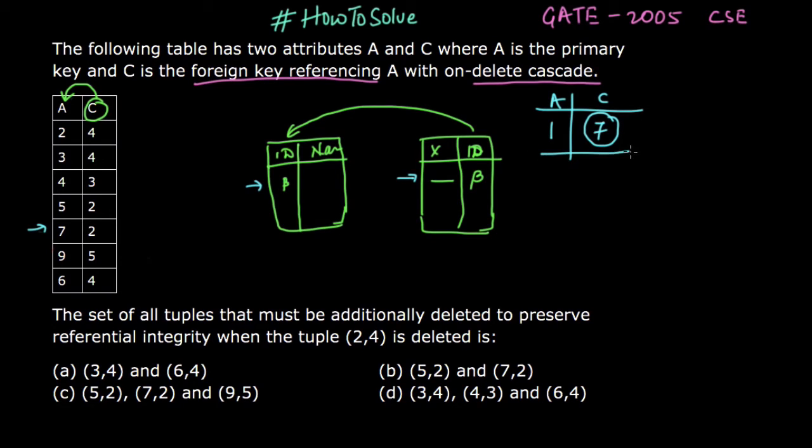But if I want to enter a tuple with 8 and let's say 1, I do not have this tuple already because this key will repeat. If I want to enter 1 and 8, in that case 8 has to be present in A value, and if it is not present, first A has to be entered. This row cannot be entered because this referred key or referred attribute is not present.